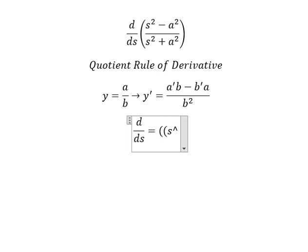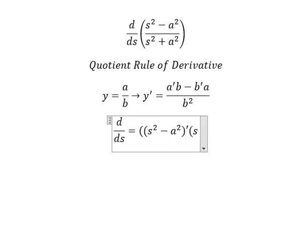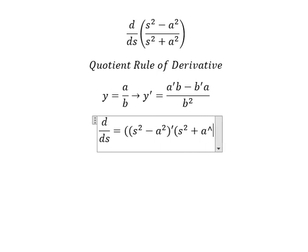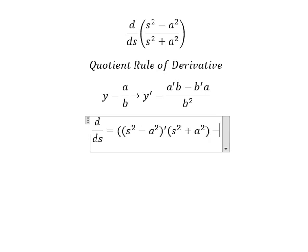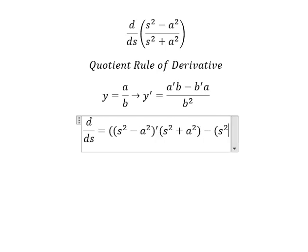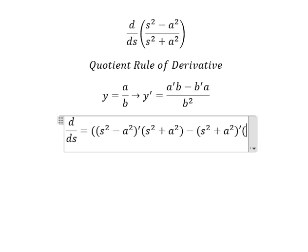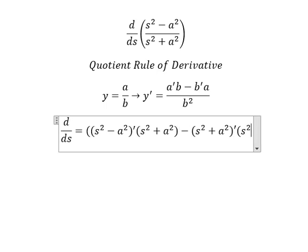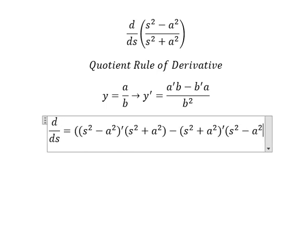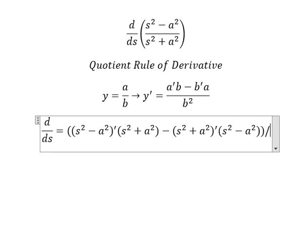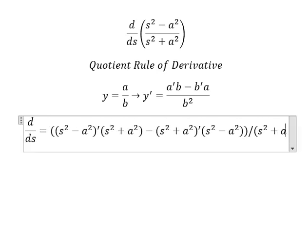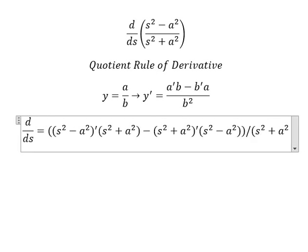So we need to do first the derivative of s squared minus a squared, multiply by s squared plus a squared. Later, we need to minus s squared plus a squared with the derivative multiplied by s squared minus a squared, over s squared plus a squared to the power of two.